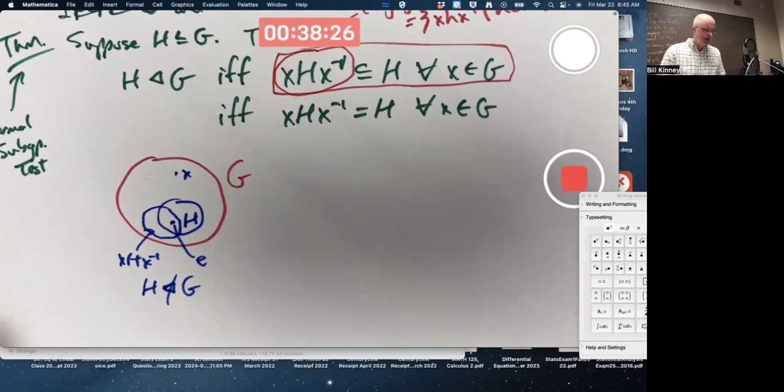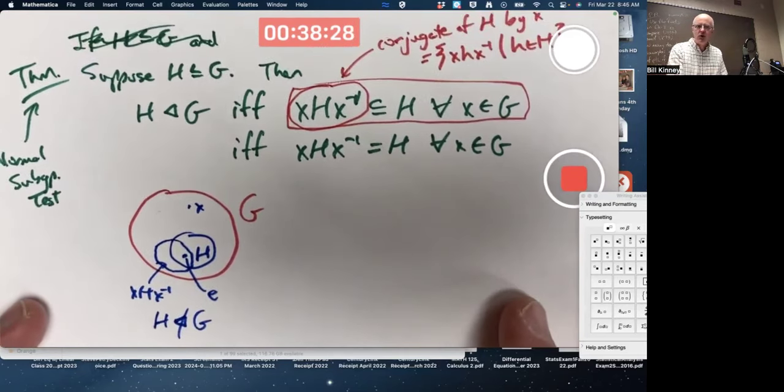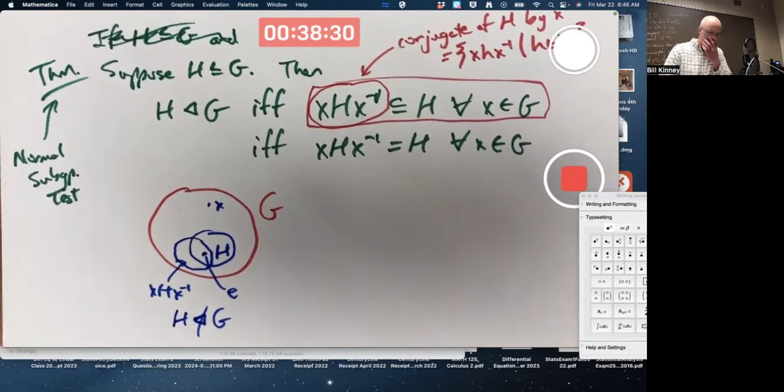For the moment, let's just finish class by applying this normal subgroup test to an example. I'll pick an example from the book. It's a matrix group.